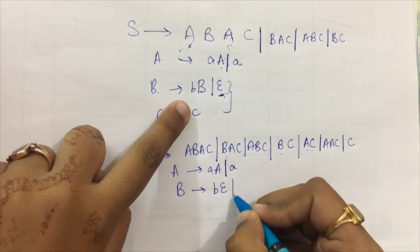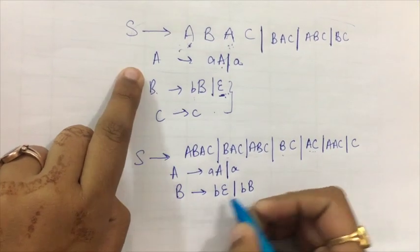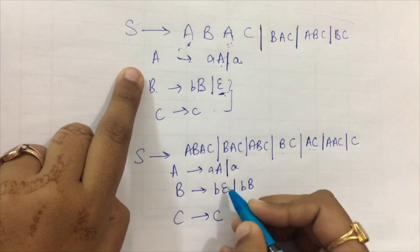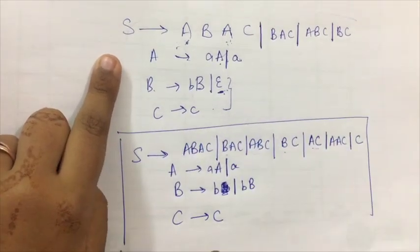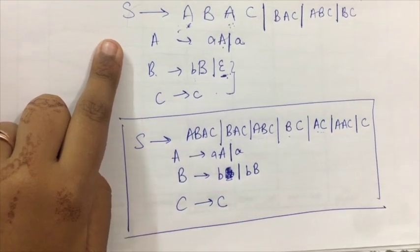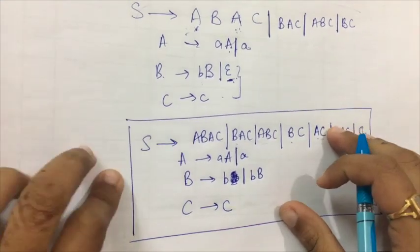B or null, or BB, and C as C. So if I just remove it from here, these are my final production rules, the reduced CFG. See one more thing that you have to notice here.